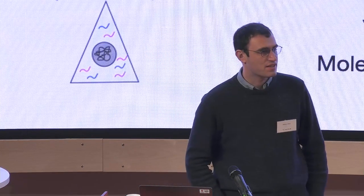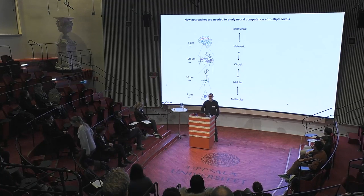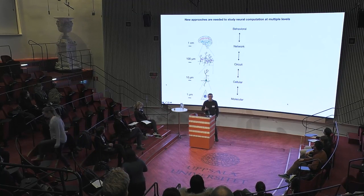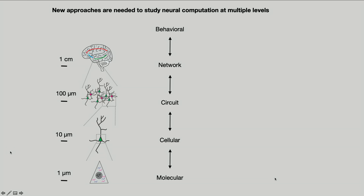My PhD was in systems neuroscience, which is the subfield of neuroscience that tries to understand how activity in networks of cells in the brain produces different types of behavior. I want to open with this slide because I think it highlights some of the challenges on a technical level and also on a conceptual level in trying to achieve these goals.